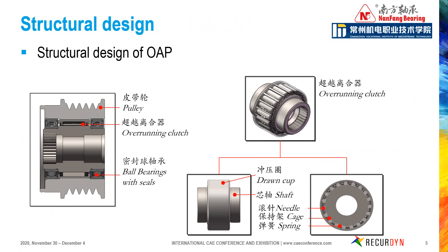Let's look at the structure of OAP. From the view of function, OAP is a one-way pulley. It consists of a pulley, roller and needle clutch, and sealed ball bearings. The OAP pulley is divided into an outer ring and inner ring. The inner ring is connected with the generator. During operation, if the generator speed is greater than the outer ring speed, the pulley will slip immediately and the inner ring will be separated from the outer ring. The needles on both sides support the radial loads.